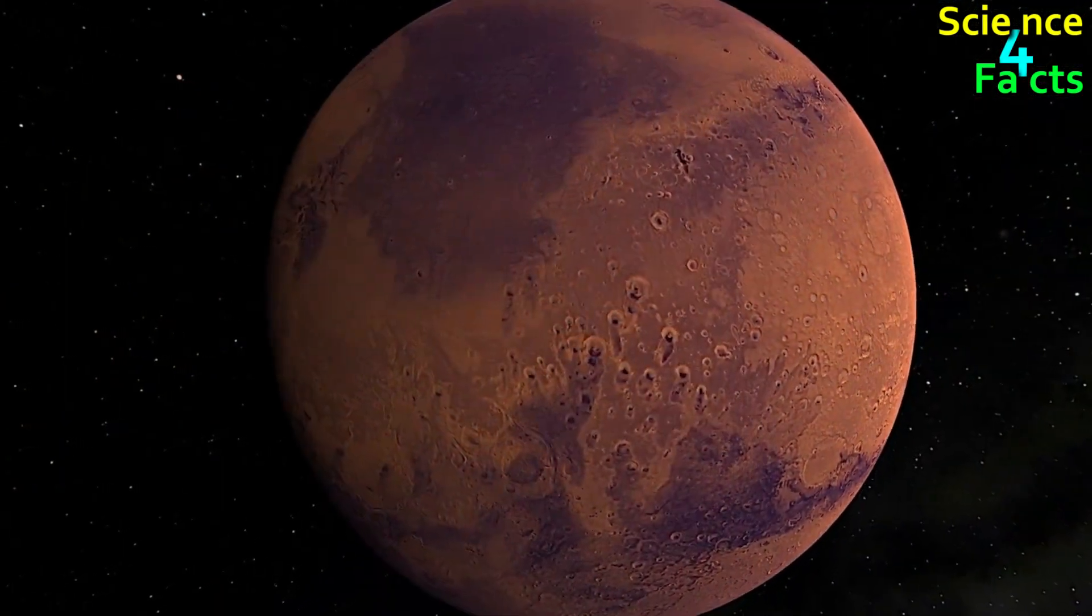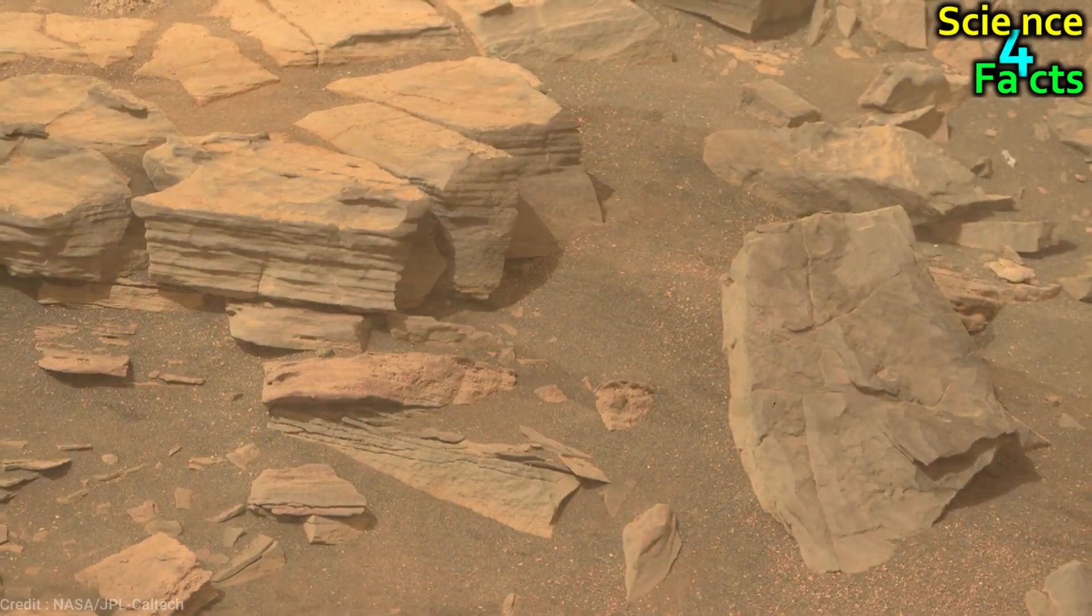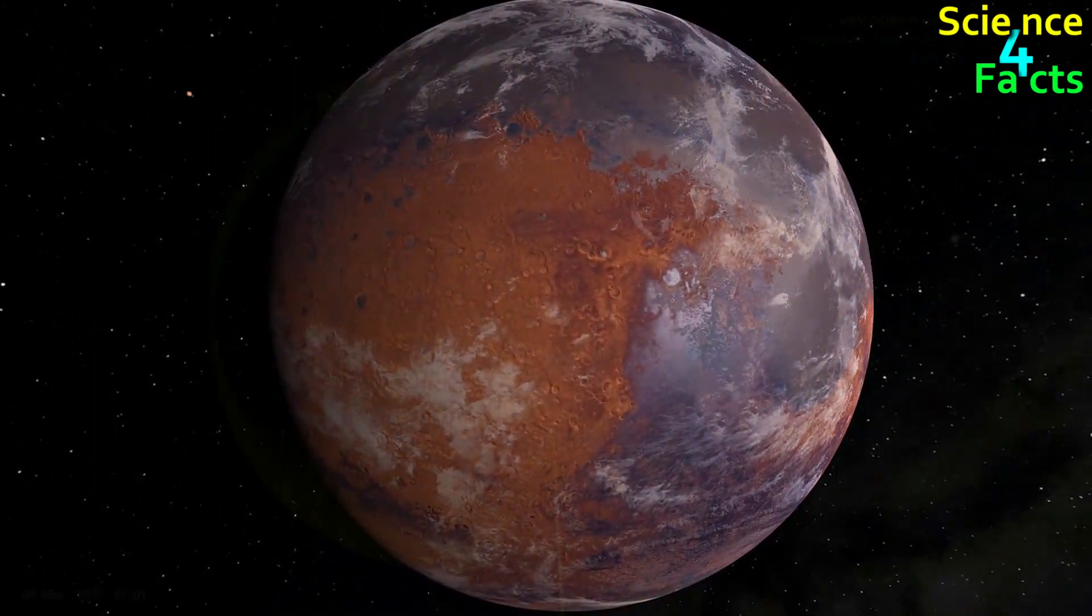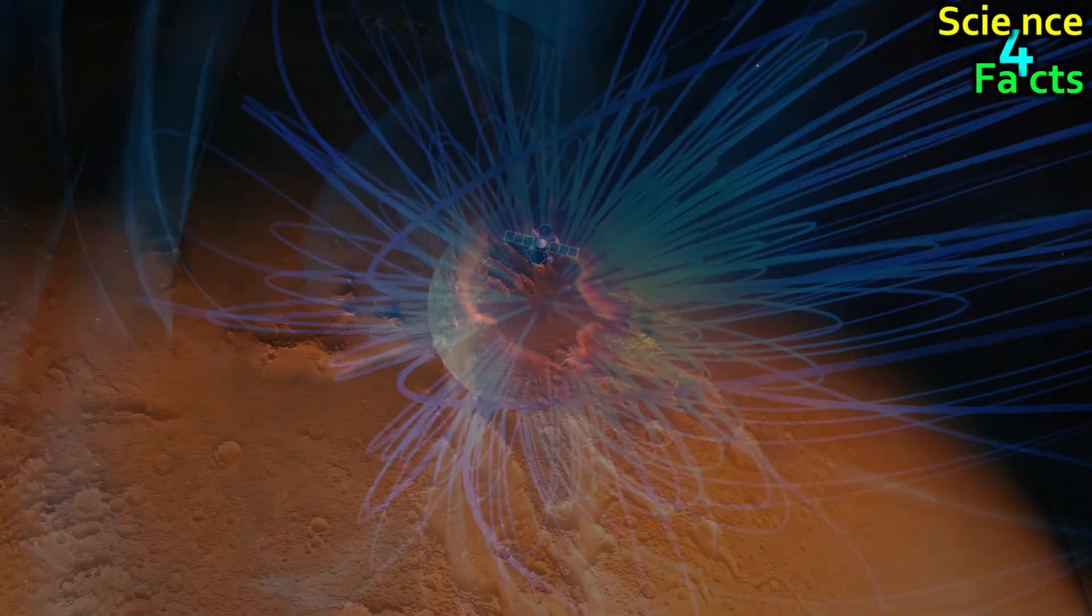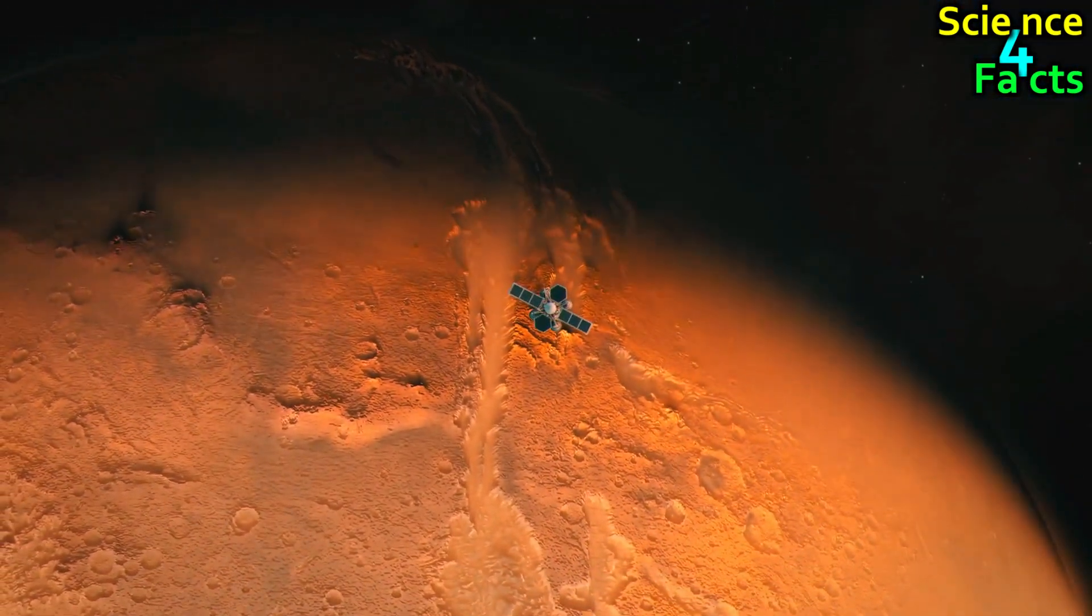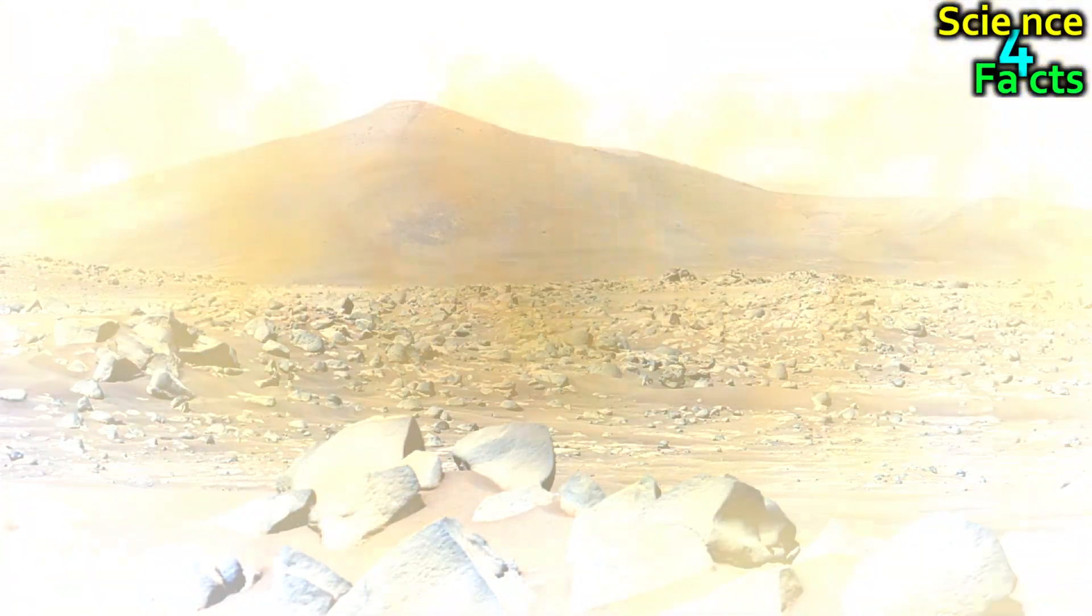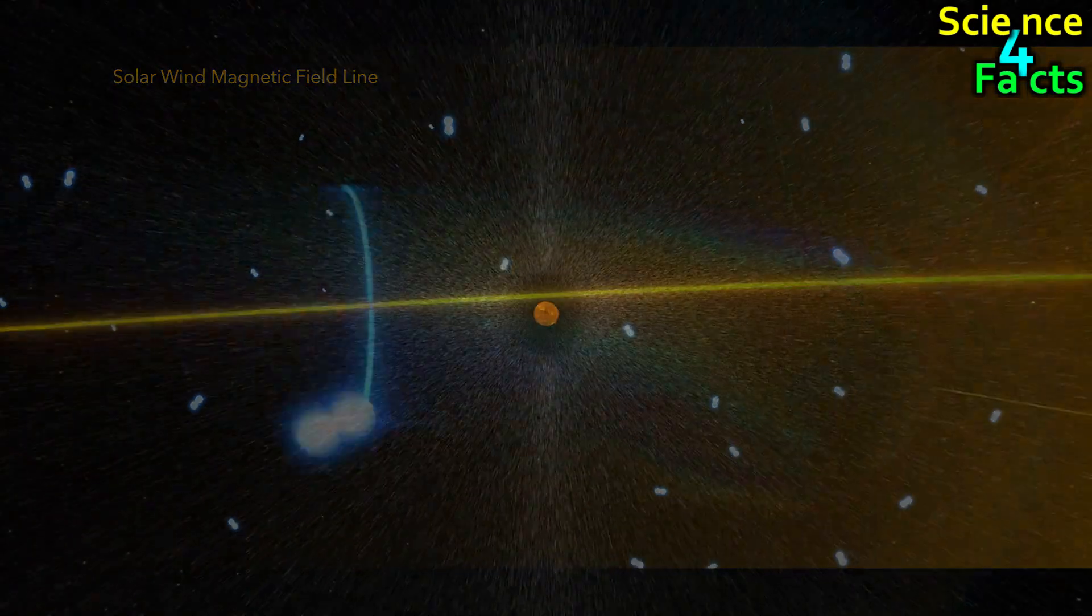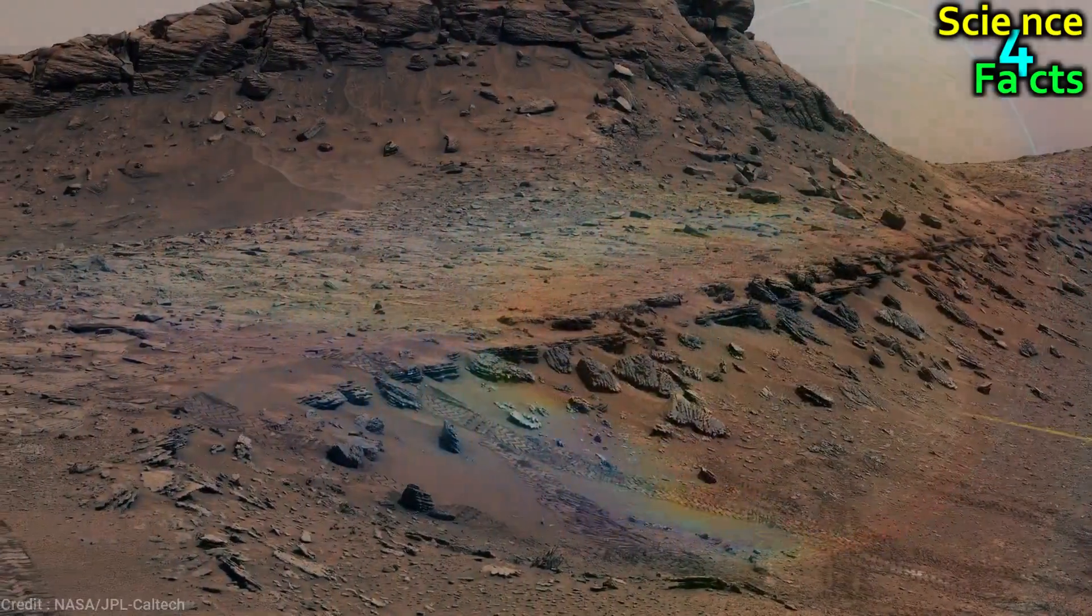Mars's surface is covered in iron oxide, giving it a reddish hue. The iron oxide is a result of the planet's rusty surface, which is due to the presence of iron minerals that have been oxidized by the planet's atmosphere over time. The planet's thin atmosphere and lack of a protective magnetic field have also had a significant impact on its surface features. The atmosphere is primarily composed of carbon dioxide, with small amounts of nitrogen and argon, and is much less dense than Earth's atmosphere. This means that the planet's surface is exposed to high levels of radiation and solar winds, which can erode the planet's surface features and create unusual shapes, such as the strange rock formations found in the Martian landscape.